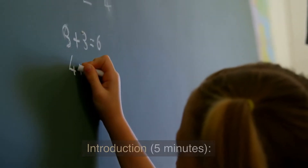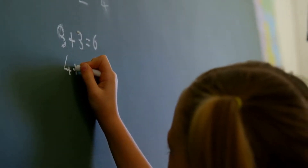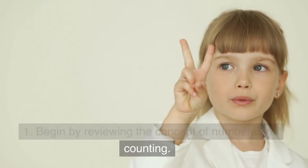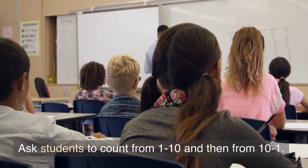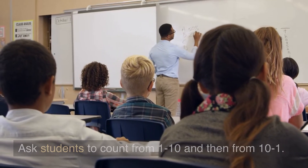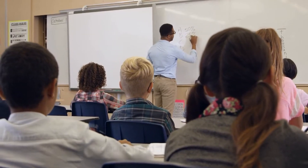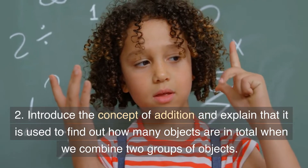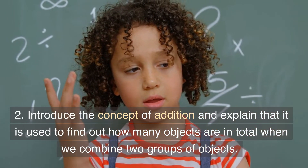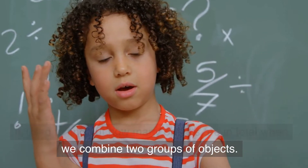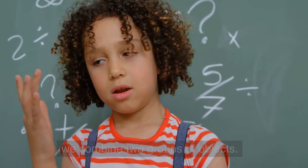Introduction — 5 Minutes: Begin by reviewing the concept of numbers and counting. Ask students to count from 1 to 10 and then from 10 to 1. Introduce the concept of addition and explain that it is used to find out how many objects are in total when we combine two groups of objects.